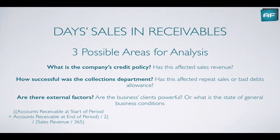Third, will there be any external factors? Are the business clients powerful? For instance, if you're a small business and your clients are much larger and more powerful, they may dictate the payment terms — you may ask for 30 days net, but they may pay 50 or 60 days later. When they're more powerful and you can't afford to lose them, they're really setting the agenda on payment terms. Or you could ask about the state of general business conditions or the economy — in a weak or slowing economy, many businesses have difficulty paying their bills, and weak business conditions may stretch out the day sales in receivables through no action of the internal company.